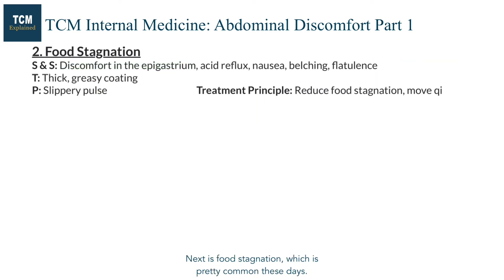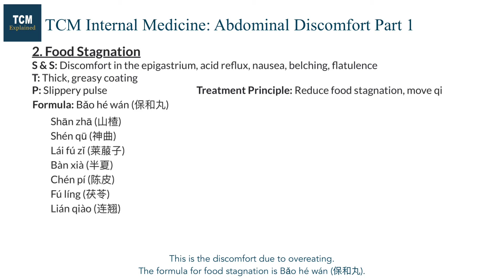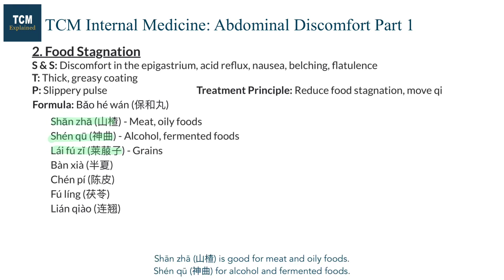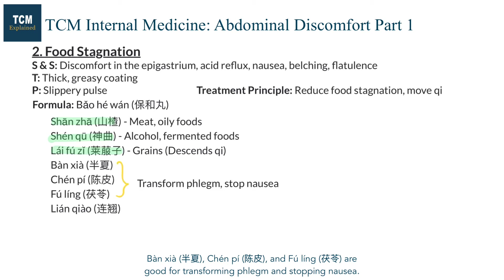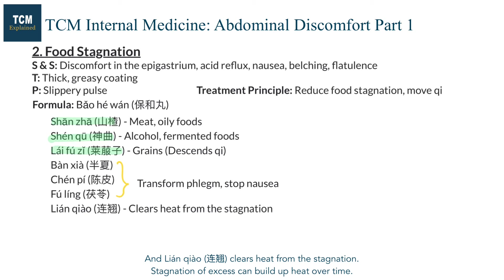Next is food stagnation, which is pretty common these days. This is the discomfort due to overeating. The formula for food stagnation is bao hewan. Shanzha is good for meat and oily foods; shenqu for alcohol and fermented foods; and laifuzi for grains such as rice or noodles. It also has an action of descending qi, which is beneficial for returning stomach qi to its normal state. Banxia, chanpi, and fuling are good for transforming phlegm and stopping nausea. And lianxiao clears heat from the stagnation, as stagnation of excess can build up heat over time.